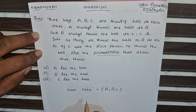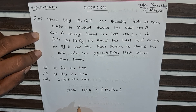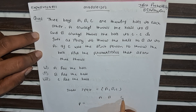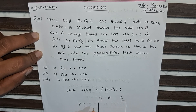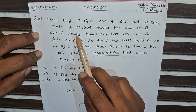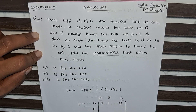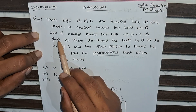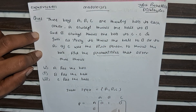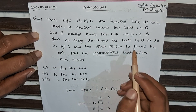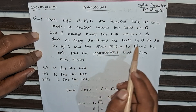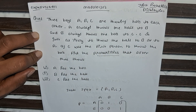Our state space is {A, B, C}. This is associated with our transition probability matrix P. In the matrix, A always throws to B, so that entry becomes 1 and the remaining entries are 0. B always throws to C, so that entry becomes 1 and the remaining are 0. C is equally likely to throw to A and B, so those entries become 1/2 and 1/2, with the remaining C-to-C entry being 0.